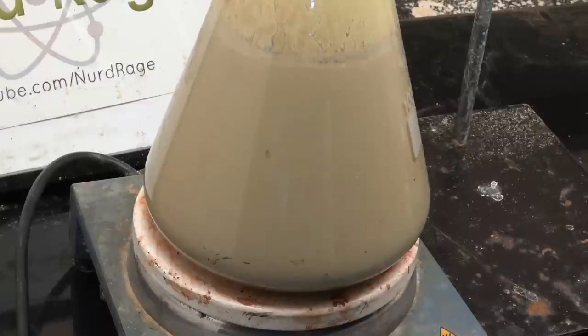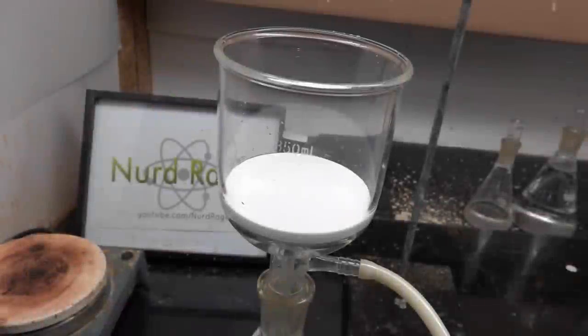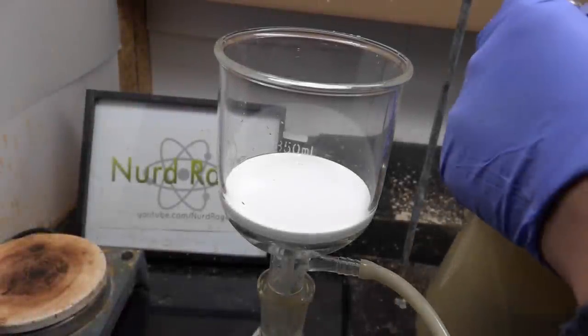Now once all the trichloroisocyanuric acid has been added, let it continue stirring for at least a couple of hours after it has reached room temperature. I let mine continue stirring overnight. Now we have to separate the chlorotoluenes from the cyanuric acid and ferrous chloride.